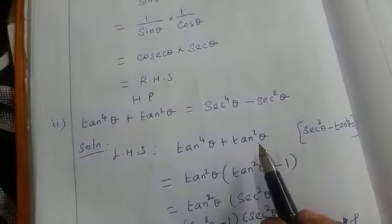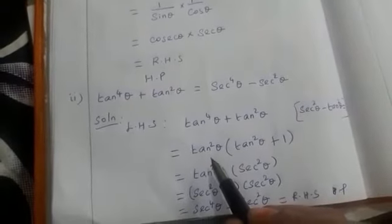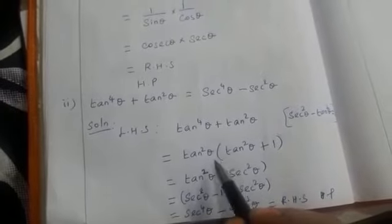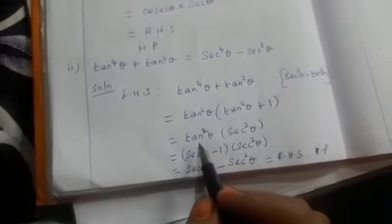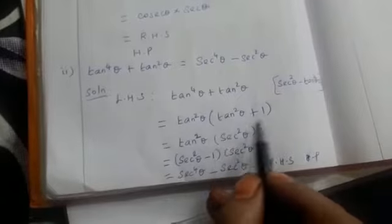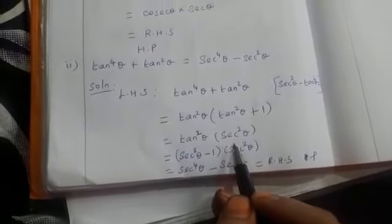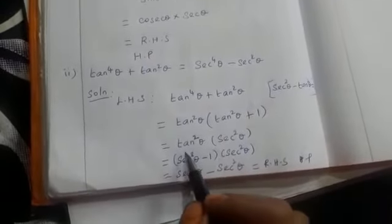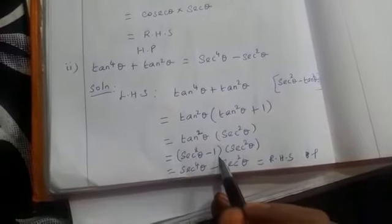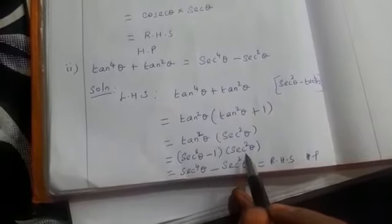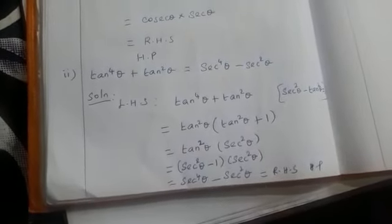To repeat: given tan to the power 4 theta plus tan squared theta on the left-hand side, we take tan squared theta common to get tan squared theta into (tan squared theta plus 1). Applying the identity, 1 plus tan squared theta equals sec squared theta, and tan squared theta equals sec squared theta minus 1. So it becomes (sec squared theta minus 1) into sec squared theta, giving sec to the power 4 theta minus sec squared theta.